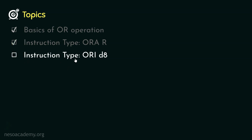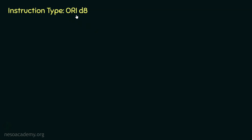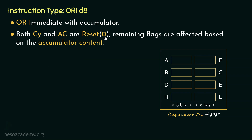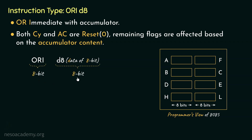Let's now focus on the next instruction type, that is ORI D8. It stands for OR Immediate with Accumulator. One of the operands is going to be inside the accumulator. Since we are performing OR, both carry and auxiliary carry are to be reset, and the remaining flags are affected based on the accumulator's content. Since we are sending 8 bits of data within the instruction itself, ORI will occupy 8 bits and 8 more bits are sent via the instruction — so cumulatively this entire instruction falls under the category of 2-byte long instructions, with a single opcode since we are using immediate addressing mode.